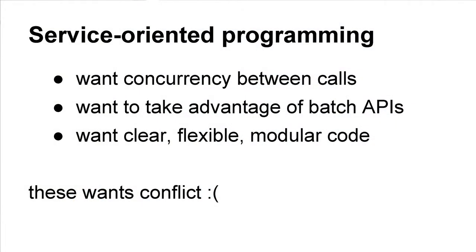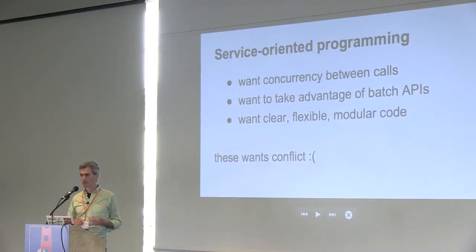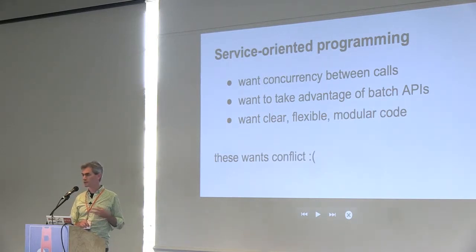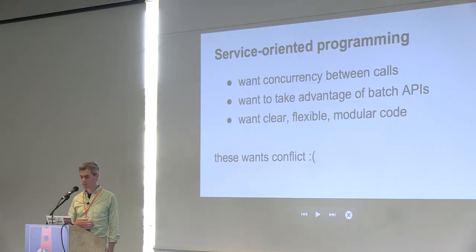So we have this new problem of service-oriented programming. How do you write an application that's composed of dozens of services, and how do you structure your code so that it can have good concurrency across all these services, take advantage of these batch APIs for efficiency, and still be clear and modular and flexible? It turns out that these wants are often in conflict. I particularly want to talk about the problem of the batch APIs.